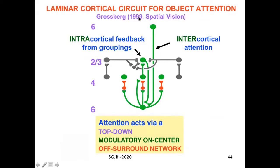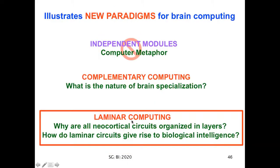Moreover, already in 1999, I knew the laminar circuits that gave rise to object attention. Activating a cell in layer six of a higher cortical area would lead to signals to activate layer six in a lower cortical area, which then folded into layer four, where you have a modulatory on-center off-surround network. So attention acts via a top-down modulatory on-center off-surround network, and I call this bending from layer six to four folded feedback. This is an example of the paradigm of laminar computing, which asks why are all neocortical circuits organized in layers, and how do laminar circuits give rise to biological intelligence?